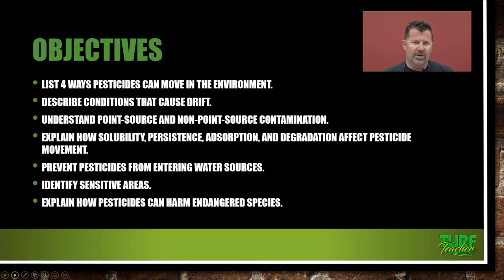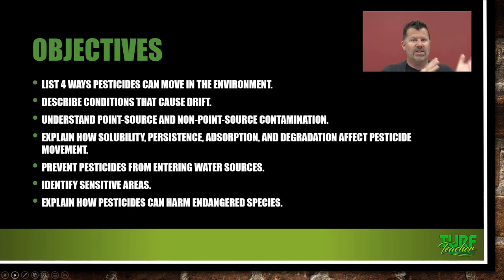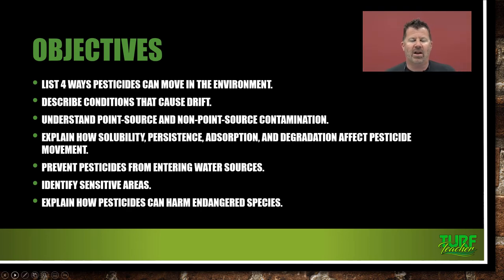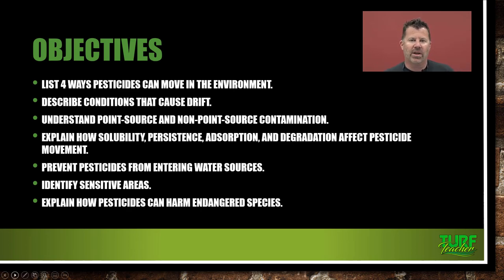Vapor drift happens when you're applying a chemical and it's hot enough that it volatilizes — it turns into a gas, the gas rises, and then the wind moves the pesticide off-site. So those are two very dangerous situations when it comes to drift.